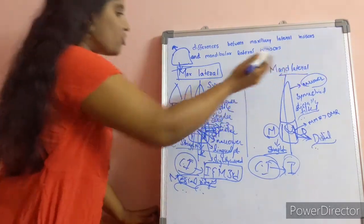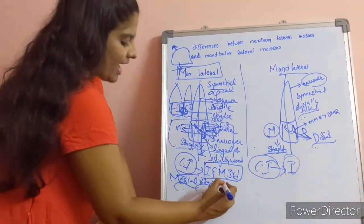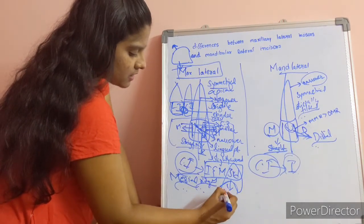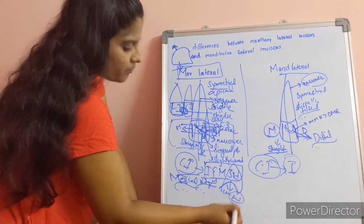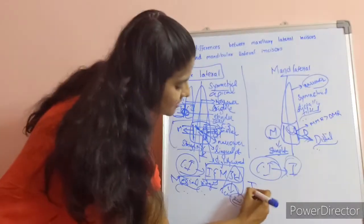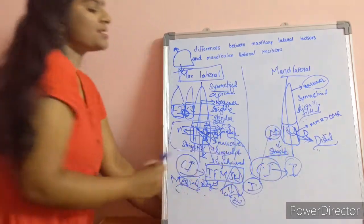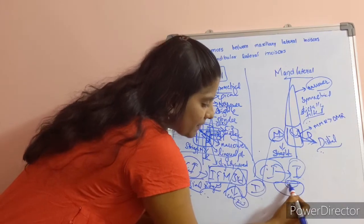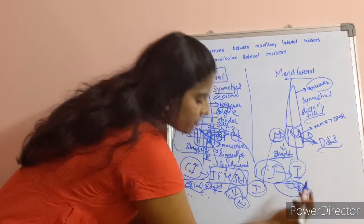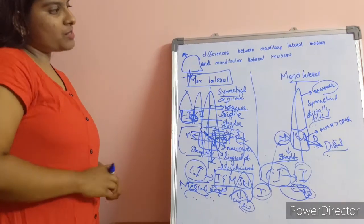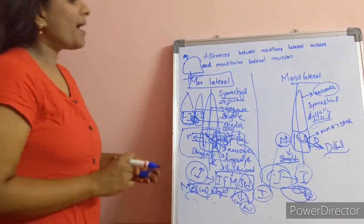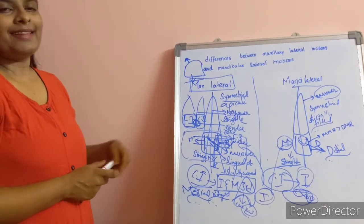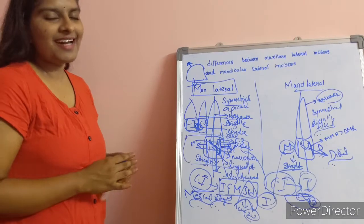From the incisal view: the maxillary lateral incisor is symmetrical, while the mandibular lateral incisor is not symmetrical. The cingulum is placed somewhat distally in the mandibular lateral incisor. All these differences between maxillary and mandibular lateral incisors will be provided in mind map format. Thank you for watching — please like, share, and subscribe to Study Dental.